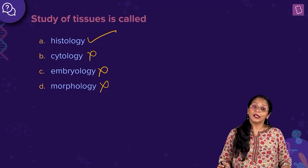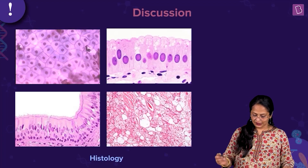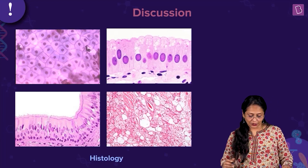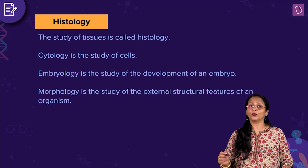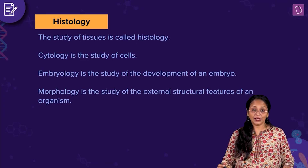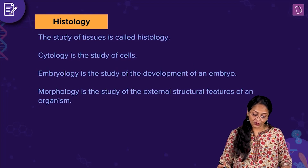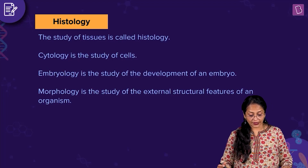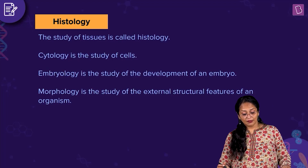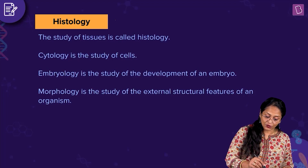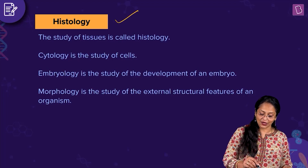The right answer is histology — the study of tissues. You can see these are various kinds of tissues: the epithelial tissues and various tissues that you would have studied. So cytology is the study of cells, embryology is the study of the development of an embryo, and morphology is the study of the external structural features of an organism. The right answer is histology.